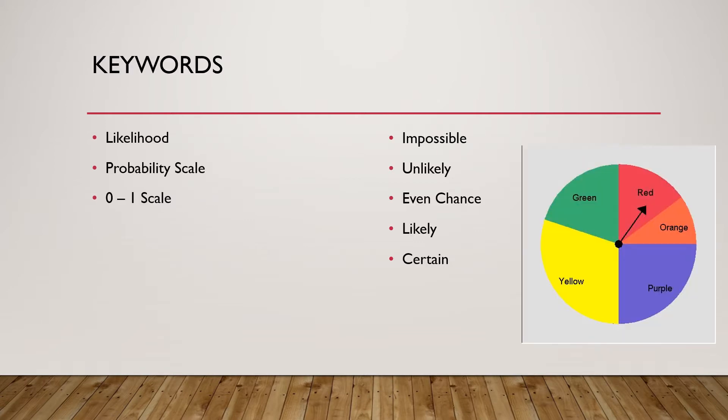There's some key words that we're using today, and this is what we're going to be looking at throughout today's lesson: likelihood, probability scale, zero to one scale, impossible, unlikely, even chance, likely, and certain.